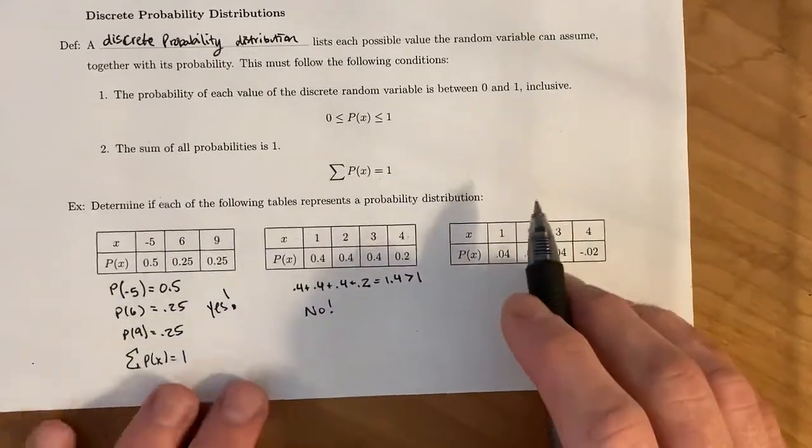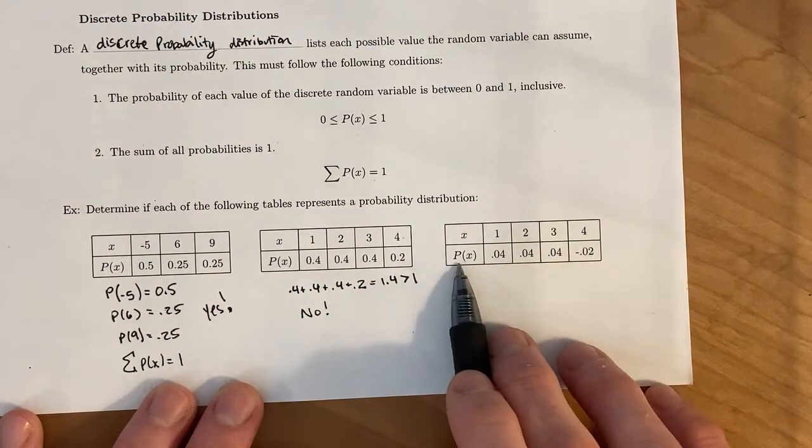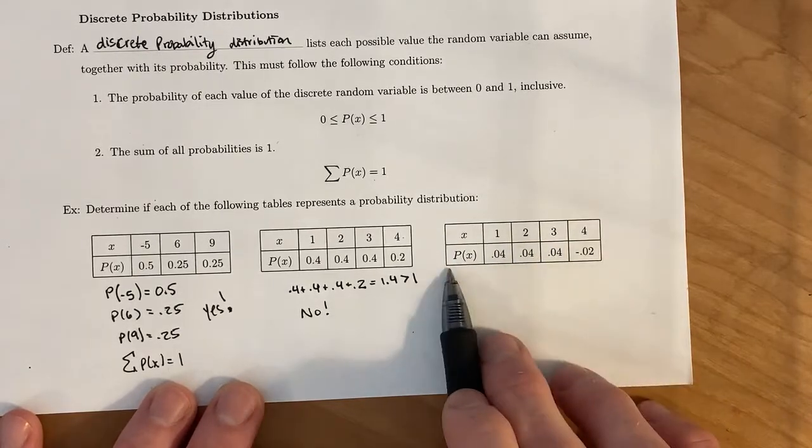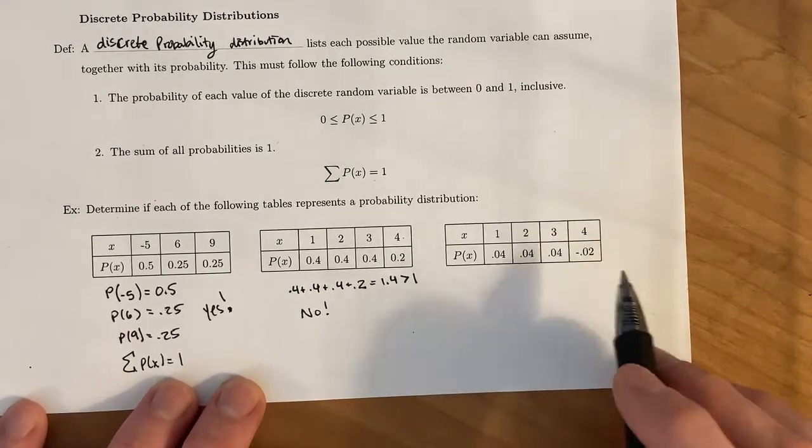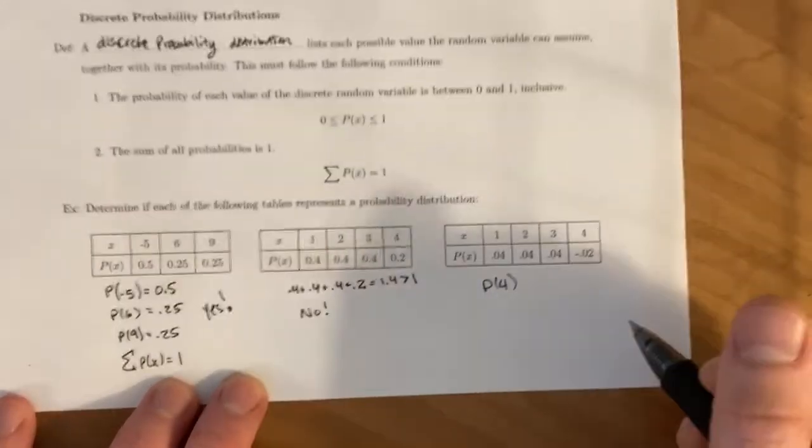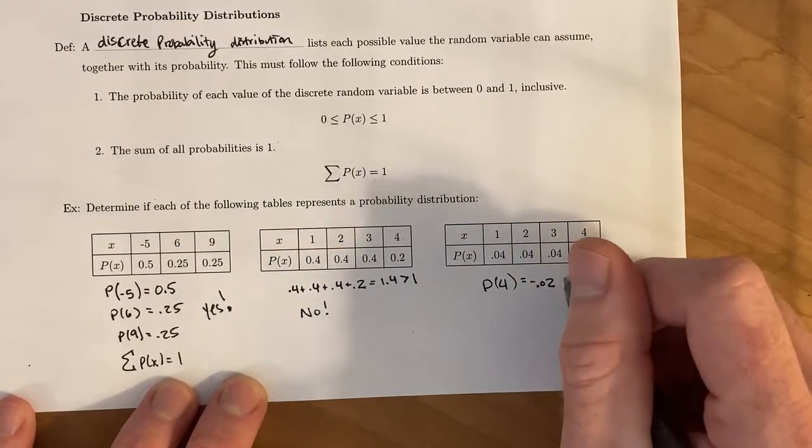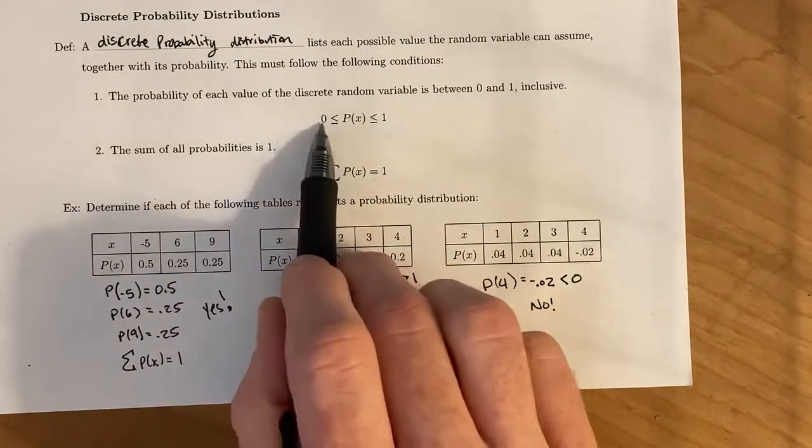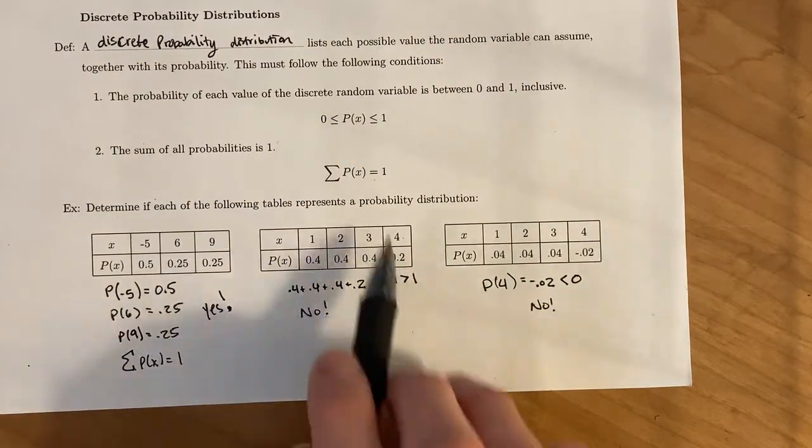And then lastly, if we come over here, the probability of a one is 0.04, probability of a two is 0.04, probability of a three is 0.04, and probability of a four is negative 0.02. I don't know what a negative probability means. So probability of four is equal to negative 0.02, which is strictly less than zero. So this fails the first one, which says that it has to be between zero and one.